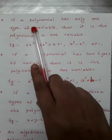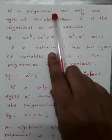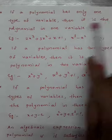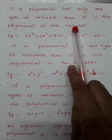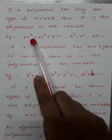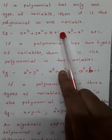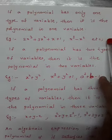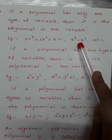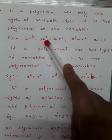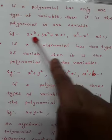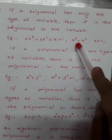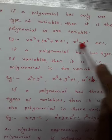If a polynomial has only one type of variable, then it is the polynomial in one variable. For example, 2x³ + 3x² + x + 1, x³ - x², etc. In these two expressions there is only one type of variable. Here, x is the variable in both expressions.